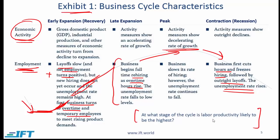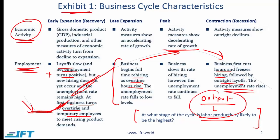At what stage of the cycle is labor productivity likely to be highest? Labor productivity is output divided by total labor in aggregate hours. Counterintuitively, this ratio is highest when we are at the trough. At the trough, labor quantity is significantly low, and while output is also low, it is not as low relative to labor. So overall, this ratio tends to be relatively high at the trough. This is somewhat testable.